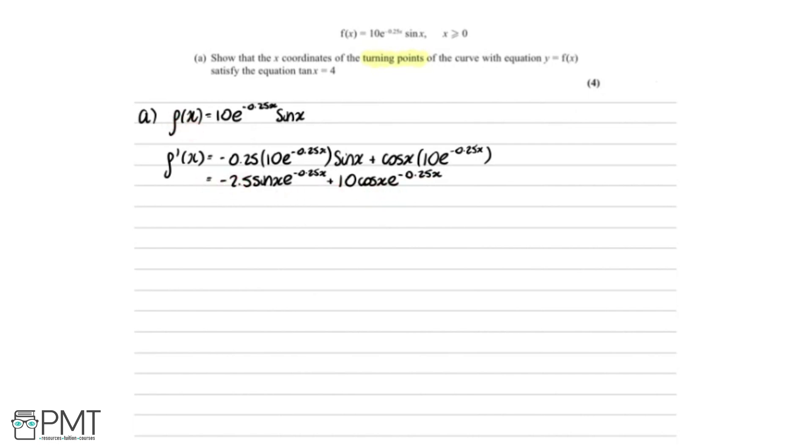So to find the turning points, we're going to set f'(x) equal to 0. So we're going to say 0 equals... Something that jumps out to me here is that we can factorize out the e^(-0.25x), because we can see that we've got that in both terms here.